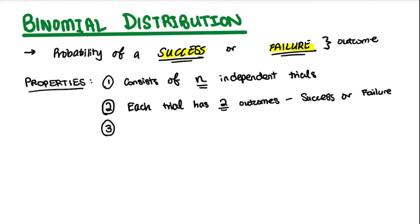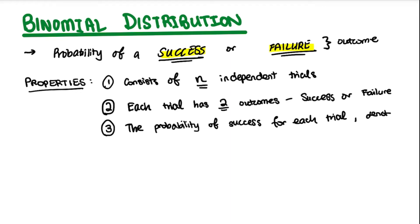The third property is that the probability of success for each trial, denoted by p, remains constant. For every single ball I take out, the probability will always be the same — for example, one out of five balls being red. These are the three main properties that a distribution must have to be classified as a binomial distribution.